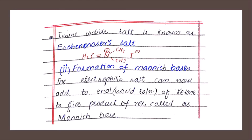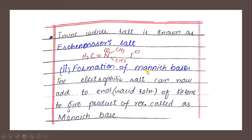We can also call this amine salt an iminium salt, sometimes referred to as a Eschenmoser salt. In the next step of the Mannich reaction mechanism, there will be the formation of the Mannich base. The electrophilic iminium salt can now react in the acidic solution with the ketone enol form.